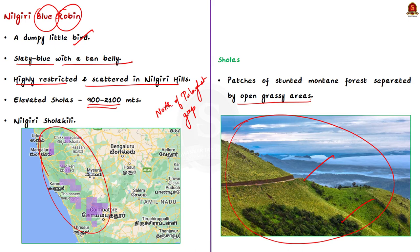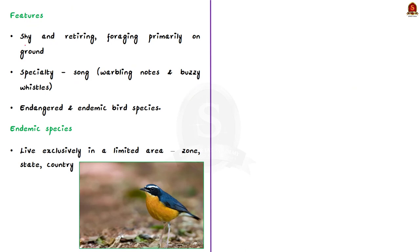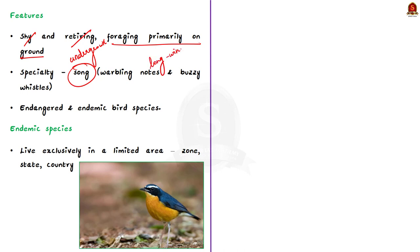The Nilgiri Blue Robin is also called the Nilgiri Shola Kili. Talking about the characteristics of the bird, it is very shy, retiring, foraging primarily on the ground and in dense undergrowth. The most interesting fact is its song — surprisingly long-winded for such a small bird, composed of high warbling notes and buzzy whistles.